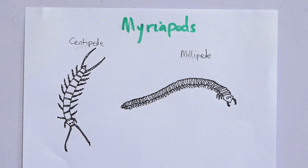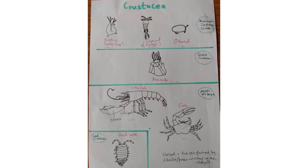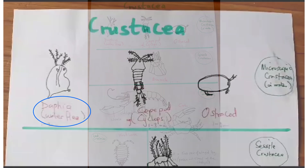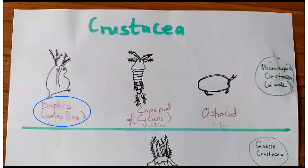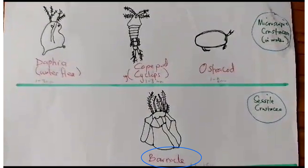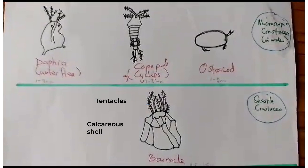Crustacea is made up of different groups of organisms. There are microscopic forms such as Daphnia, Cyclops, and ostracod — the ostracod almost looks like a seed rolling in water. There are also sessile crustaceans: the barnacle starts as a small flea-like organism, settles on a rock, and produces a hard shell around itself, with only its tentacles visible.